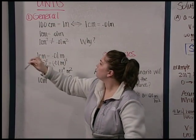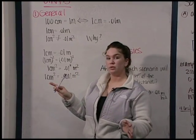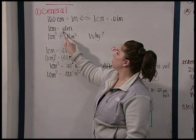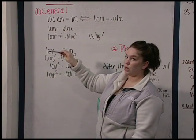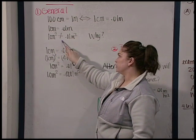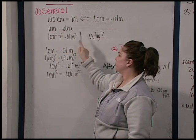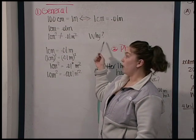So a mistake a lot of students make is to say that one centimeter equals 0.01 meters, so one centimeter squared equals 0.01 meters squared. This is not true. Why?